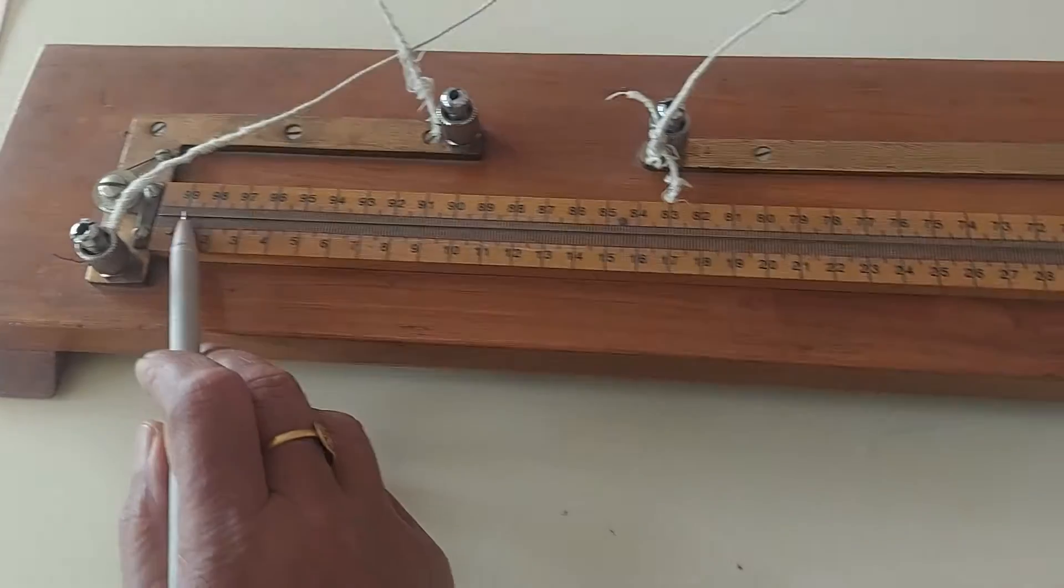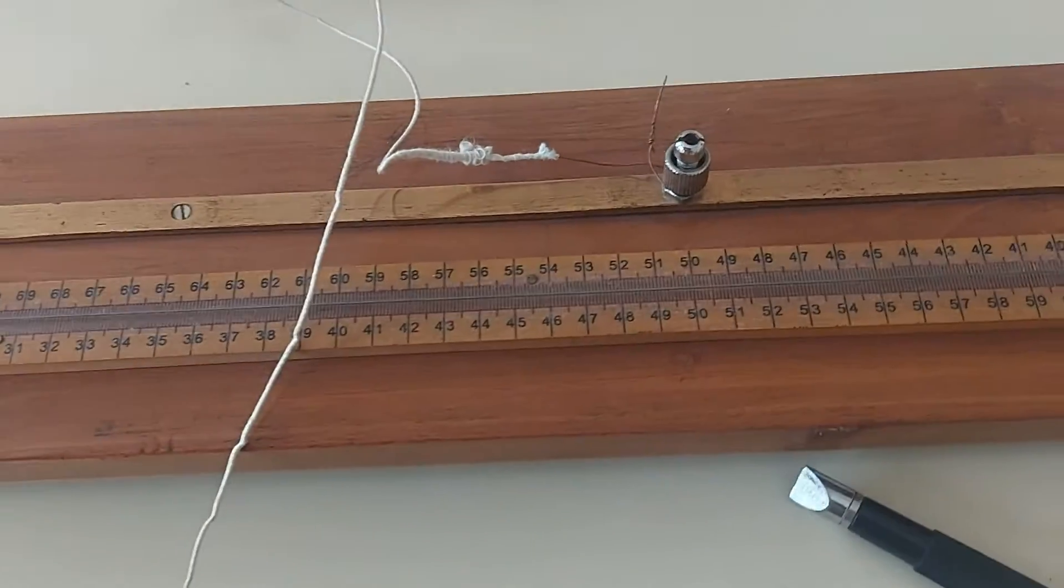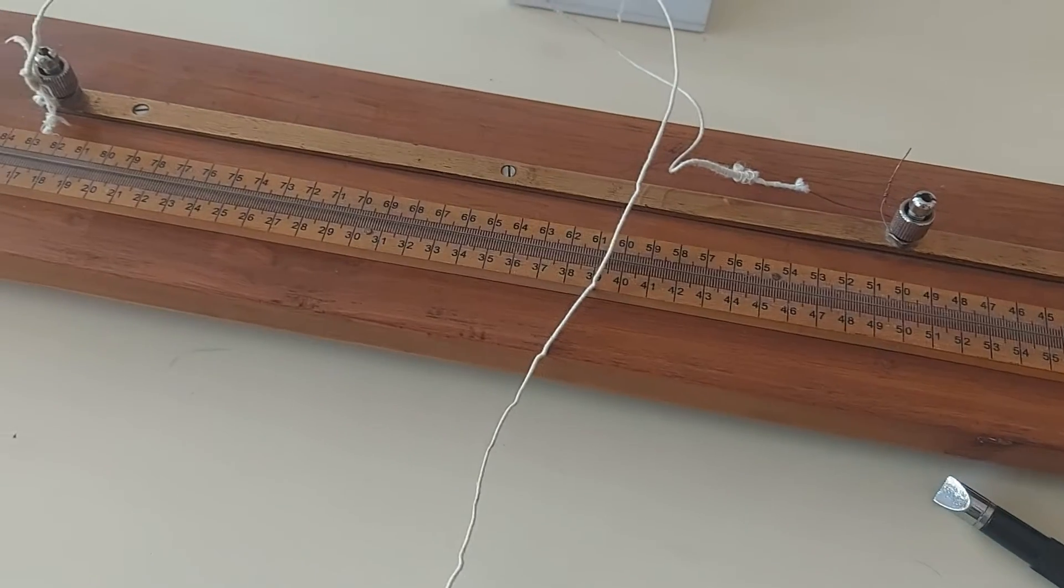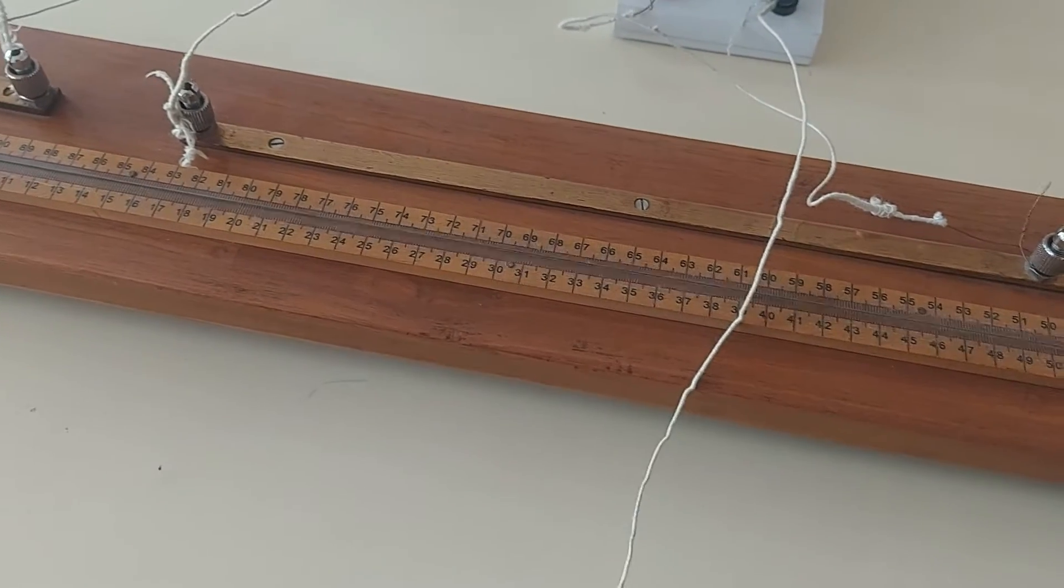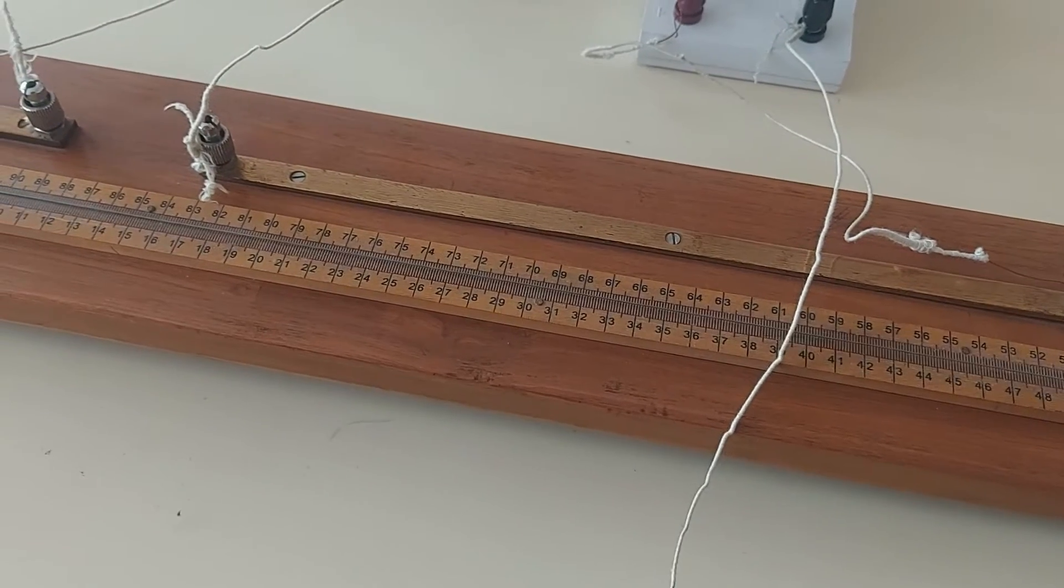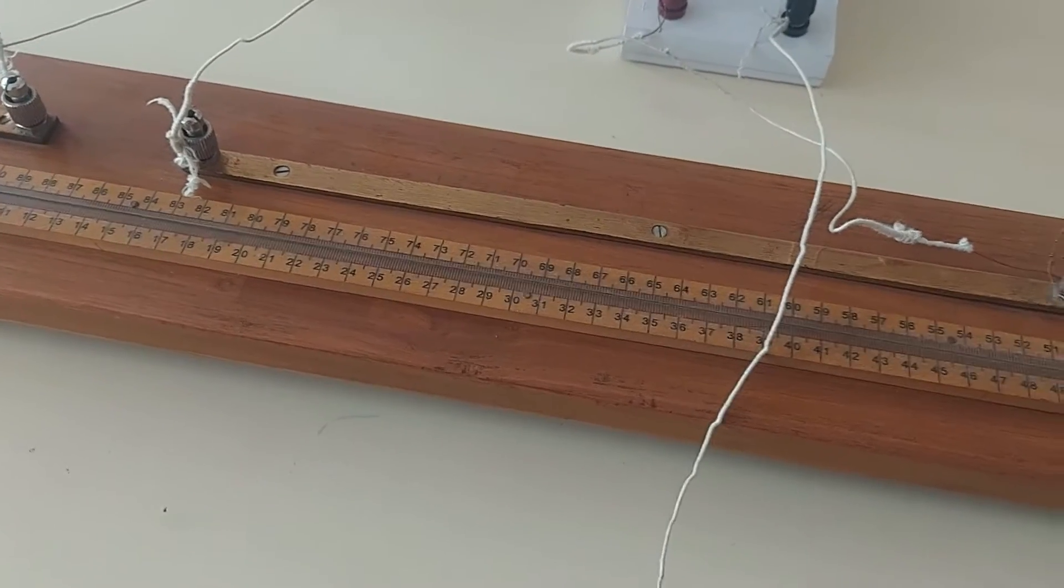Now regarding R3 and R4, we are making use of this resistance wire, Constantin wire, which is a high resistivity wire, as the two other arms of the Wheatstone bridge to provide me with the resistance R3 and R4.